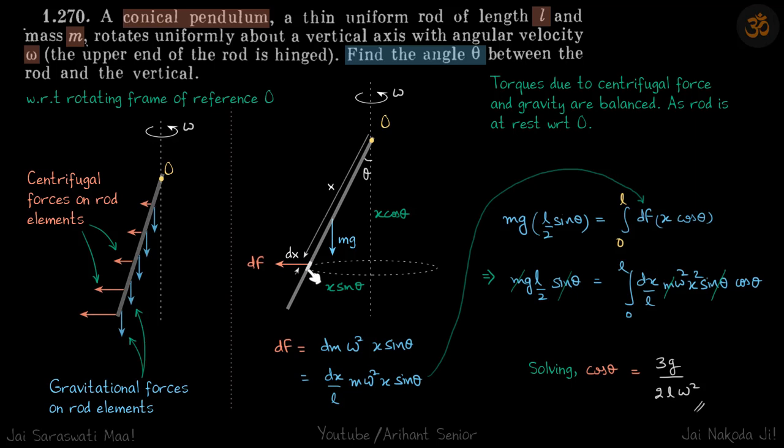Let's take a small element here and calculate the small torque due to this element. Then we can find the total torque and balance it with torque due to mg.